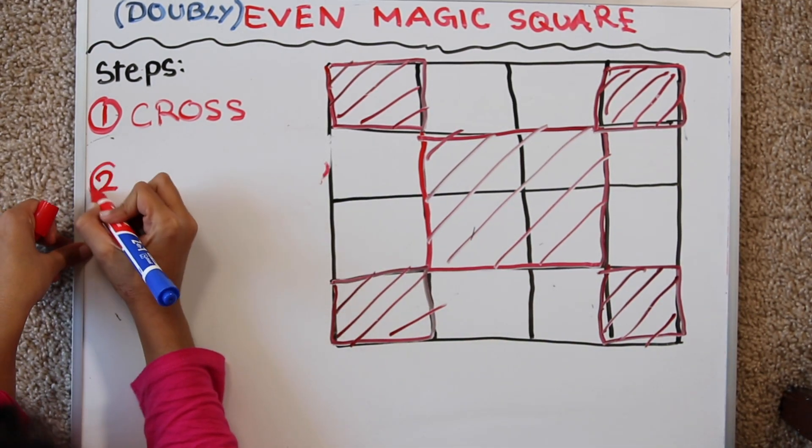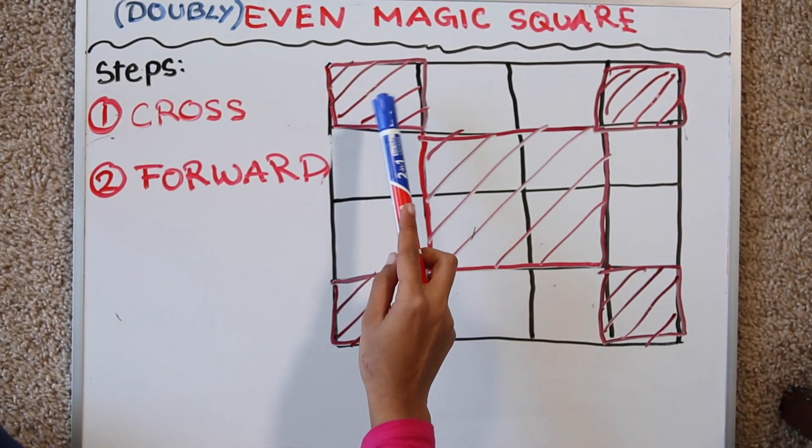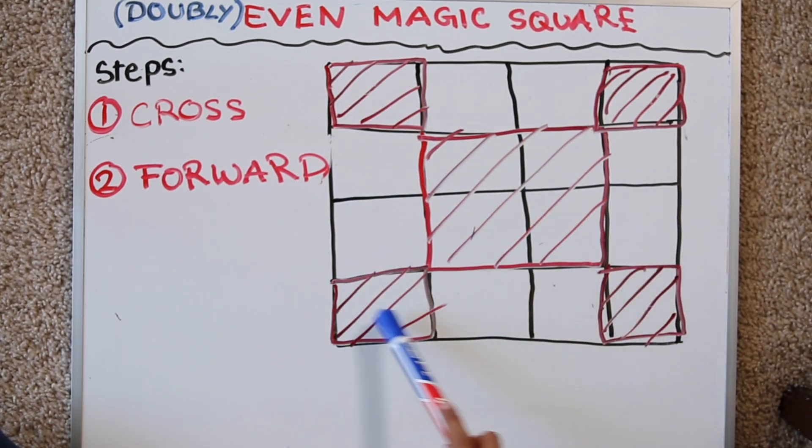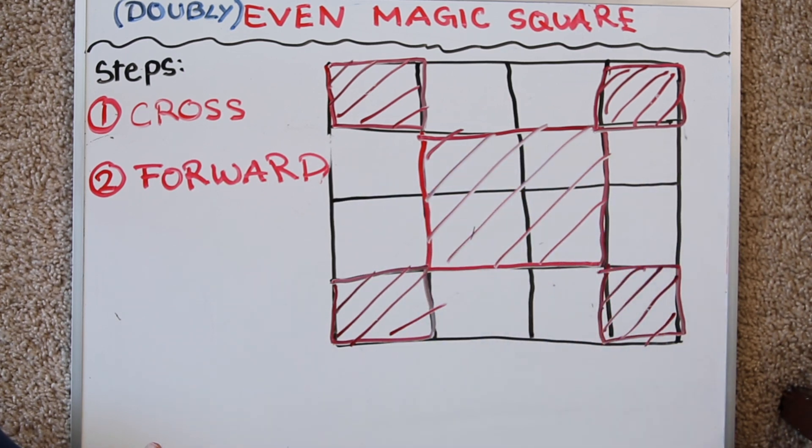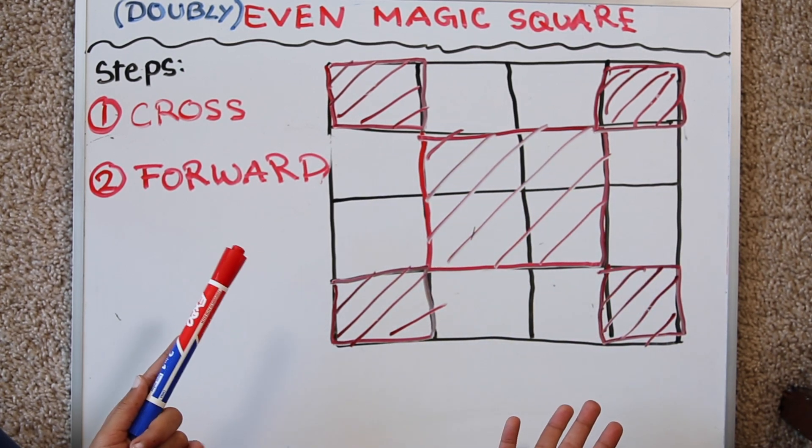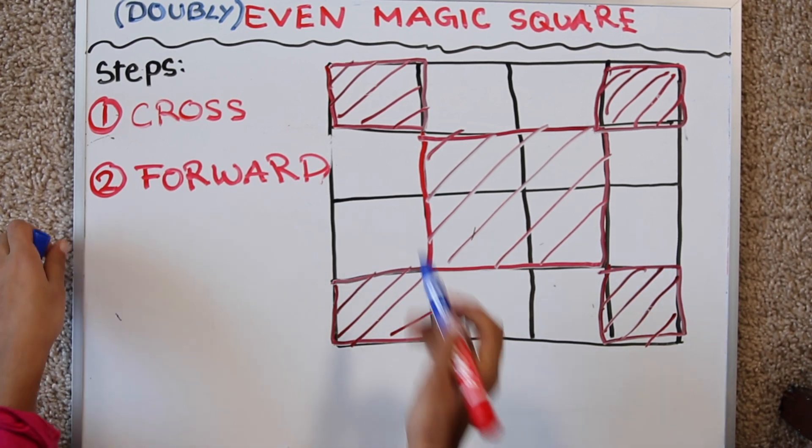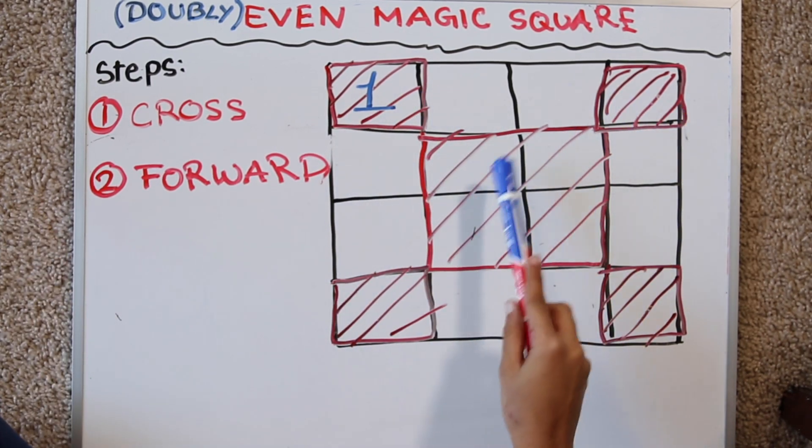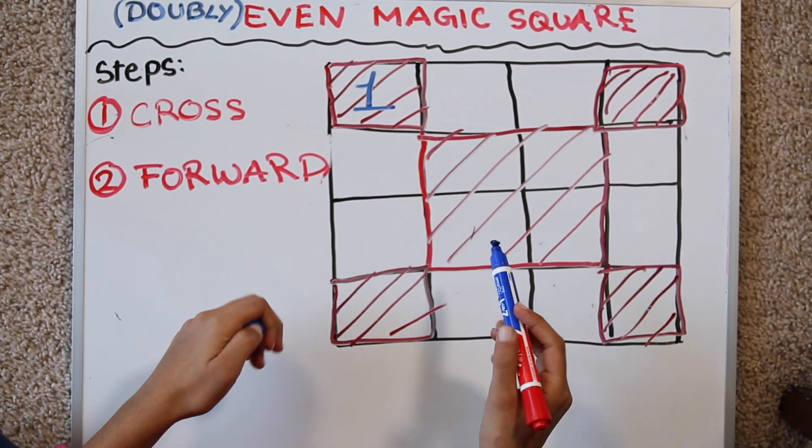Step 2 is very simple. It's called forward. All you need to do is move forward from the first square left to right, left to right, left to right until you reach the last square. And as we're moving forward we're filling the squares with numbers. So what number do we start with? Well you can start with any number. I'm going to start with 1. The trick is you can only write in the shaded squares while moving forward, but you count every square. Let me show you.